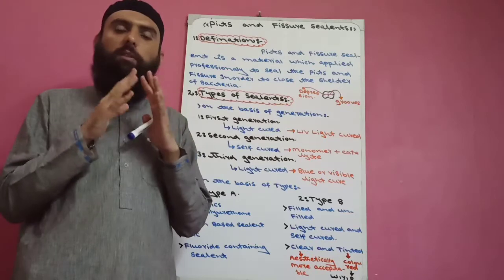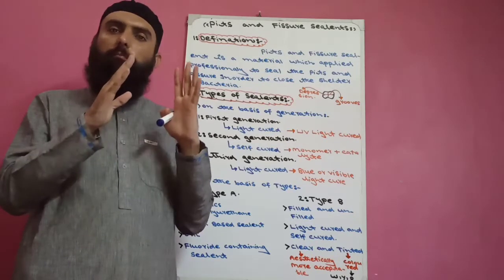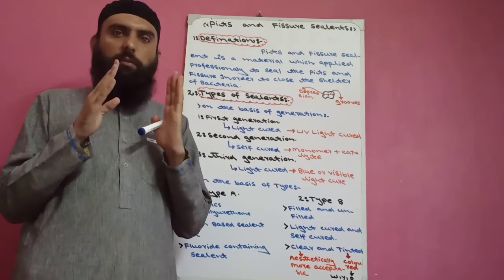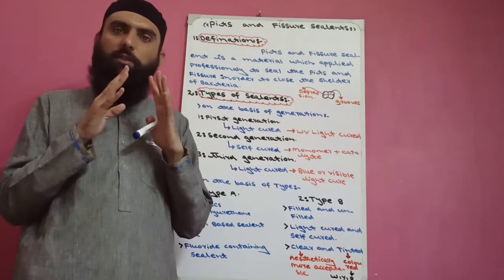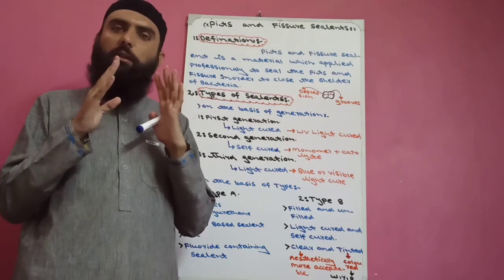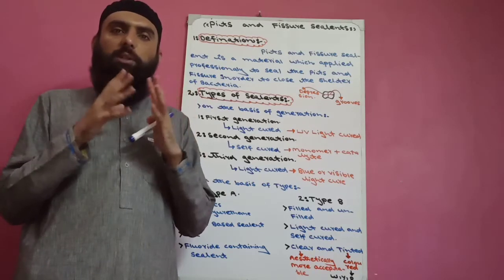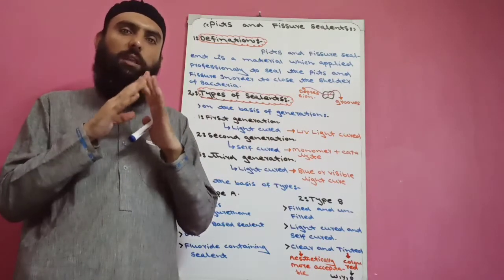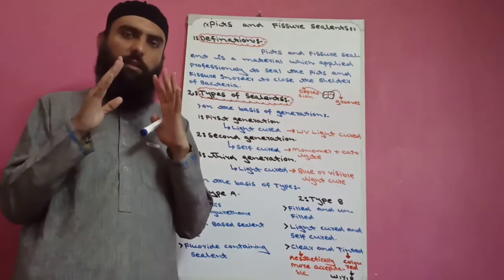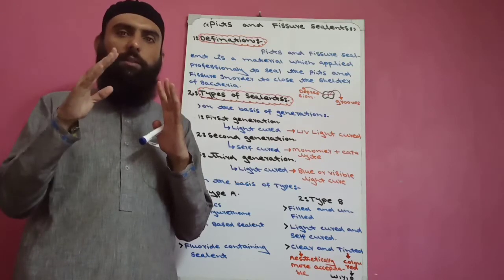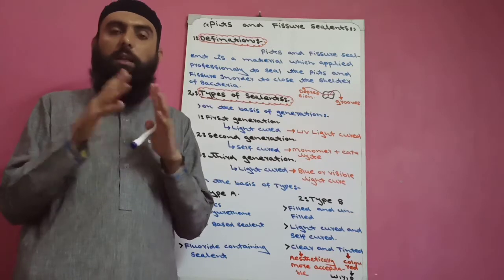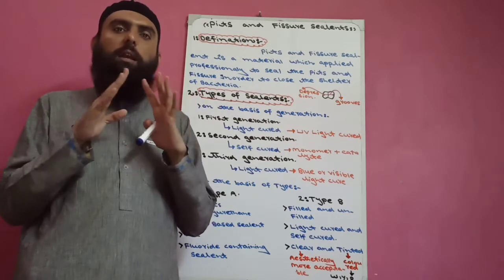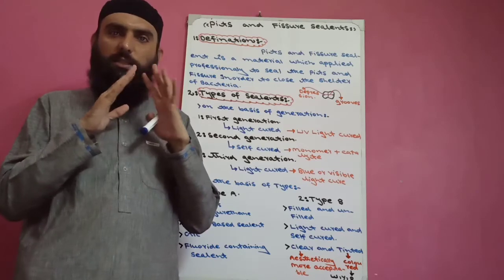Pits and fissures are the best shelter for bacteria. When we eat food, food debris enters into the pits and fissures. When we do brushing, the bristles of the brush do not reach the pits and fissures to clean them. The food debris accumulates there, calculus forms, plaque forms, and bacteria start acid deposition — and the caries process begins.